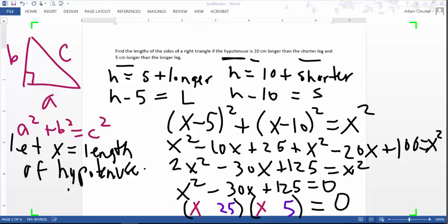25 times 5 is 125. And I want a negative 30. So I'm going to say negative 25 and negative 5. Because negative 25 times a negative 5 gives positive 125. And when I foil it out, negative 25 and negative 5 will give us negative 30.